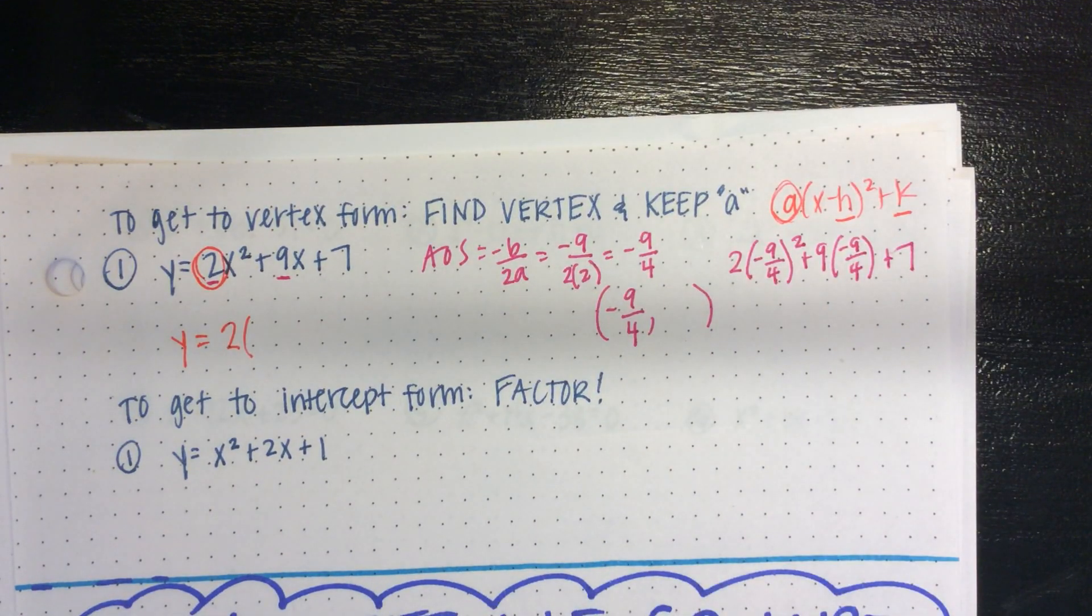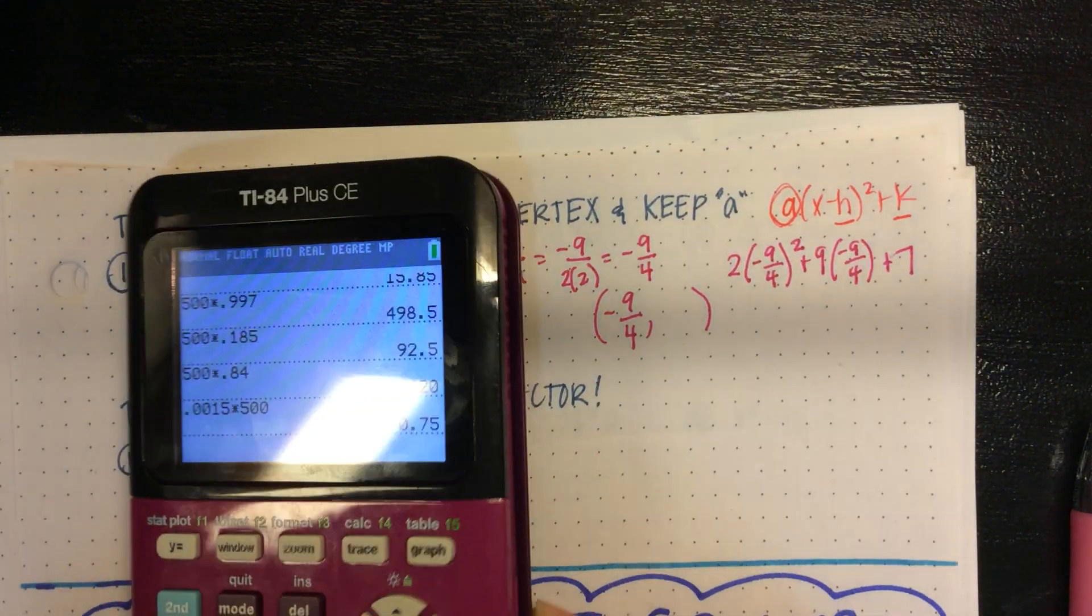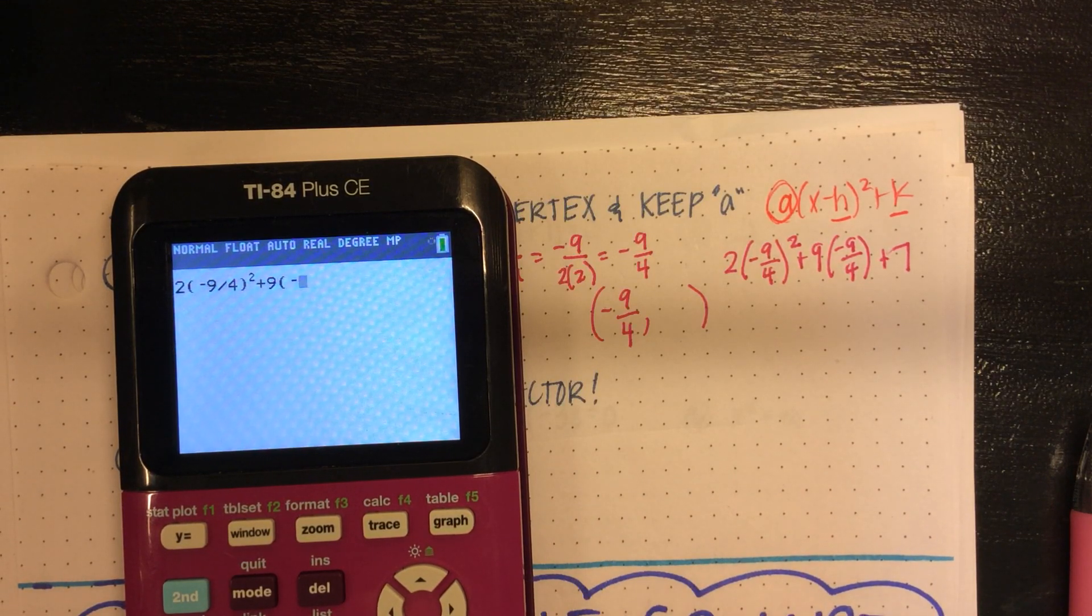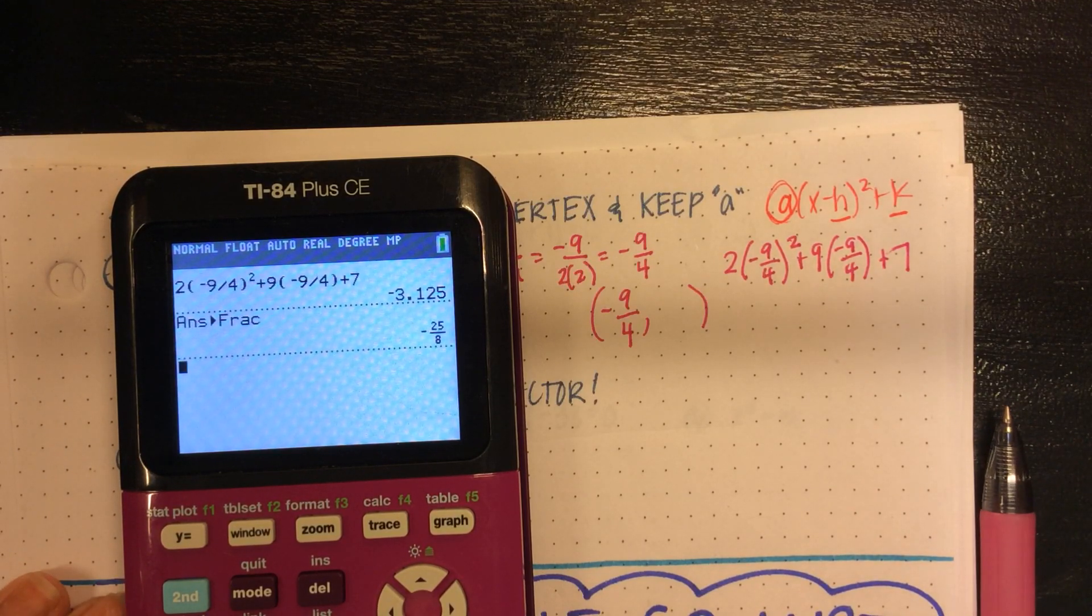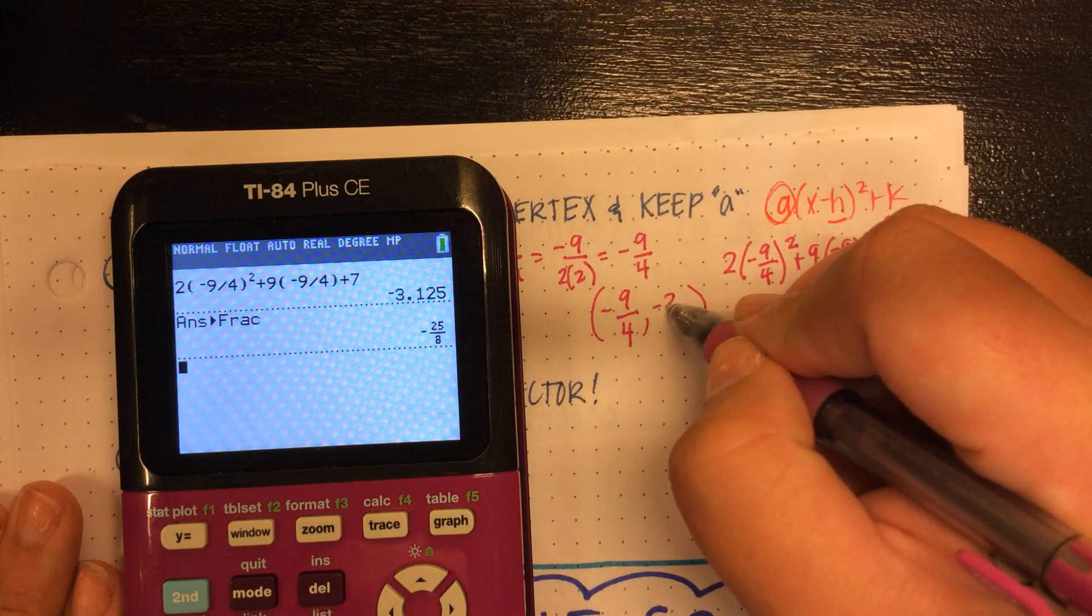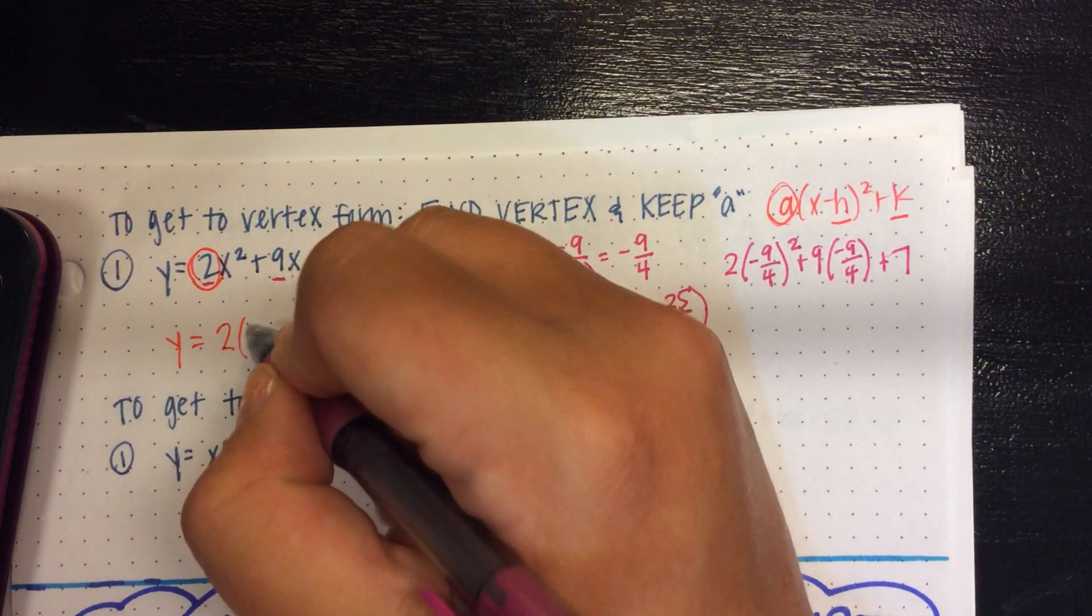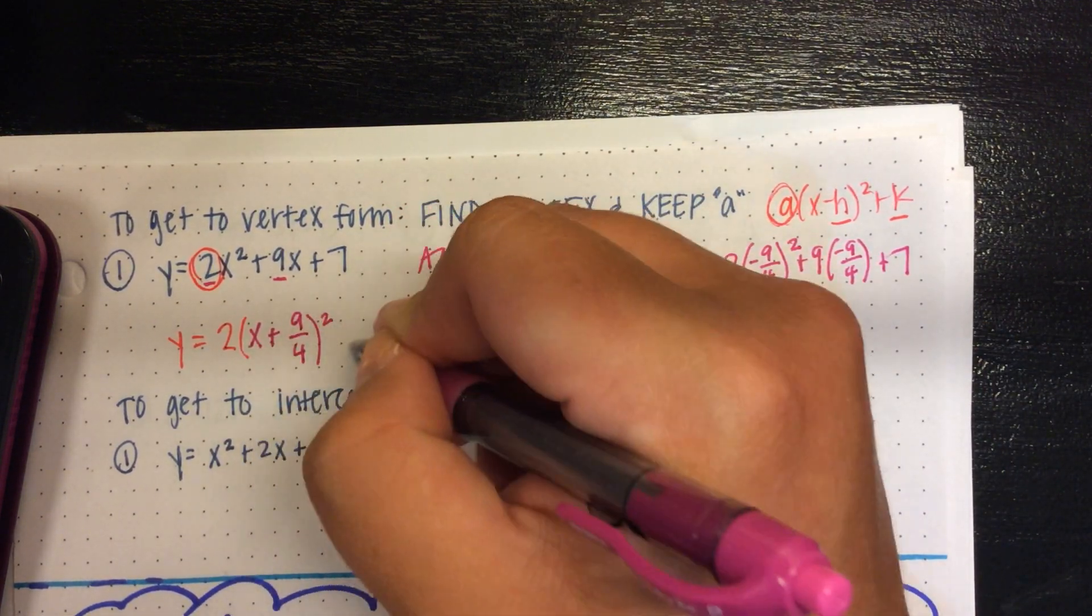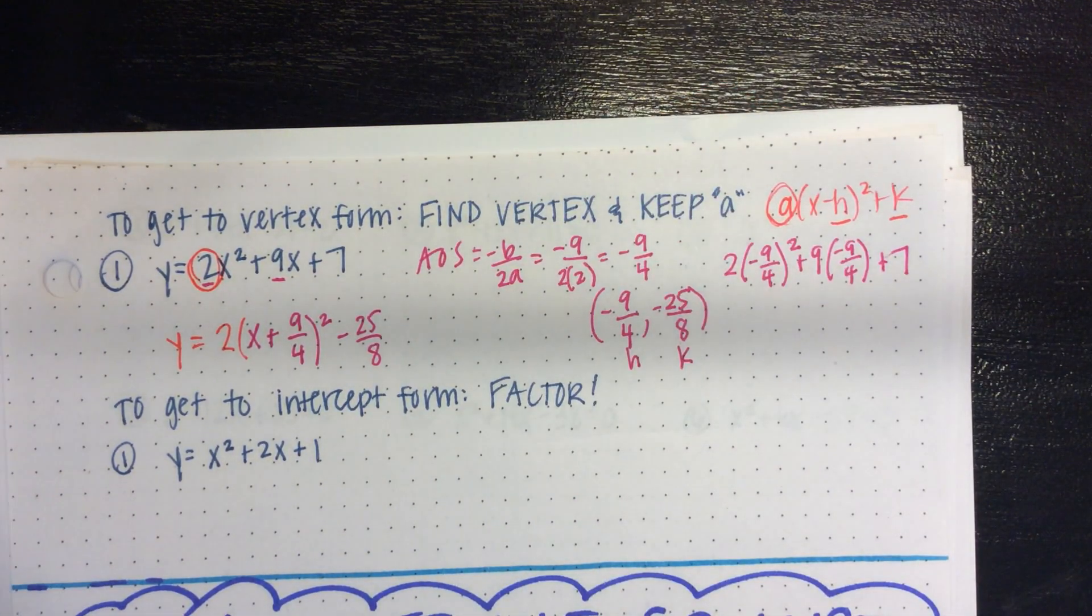And guess what? You can type that into the calculator so easily. If I can find my calculator, I'm going to type it in just like it's written. So we've got 2 times negative 9 divided by 4 squared plus 9 times negative 9 divided by 4 plus 7. And if you get a decimal, we can go math, enter, enter, and we can get that fraction. And then I'm going to come plug these back in. So I have x, remember, opposite sign for my h value. So I'm going to say x plus 9 over 4 squared. And then my k keeps the same side, so minus 25 over 8.